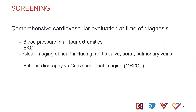At the time of diagnosis for cardiac screening, we usually recommend blood pressure on all four extremities, an EKG, and then detailed imaging of the heart, which is typically an echocardiogram at diagnosis, followed by discussion of when the most appropriate time would be for cross-sectional imaging such as an MRI or CAT scan.